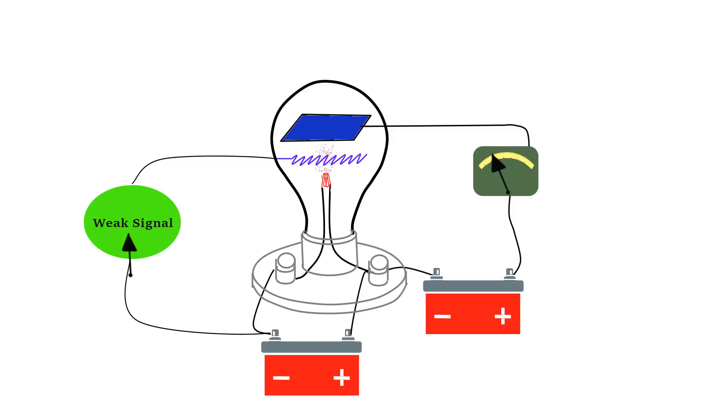If you add a signal to the grid wire with a negative charge, however, it would block the negative electrons from jumping onto the plate, drastically reducing the current. In this way, small changes in the grid wire can make big changes in the current coming out of the plate. This was both an electric amplifier and an electric rectifier or one-way valve.